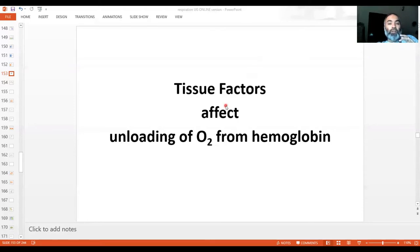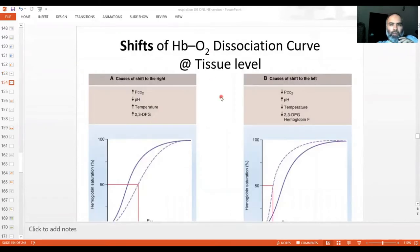In the following slides we'll be looking at the shifts of the hemoglobin-oxygen dissociation curve and solidify our understanding of what exactly goes on when the blood hits the tissues. So now we are at the tissue level.